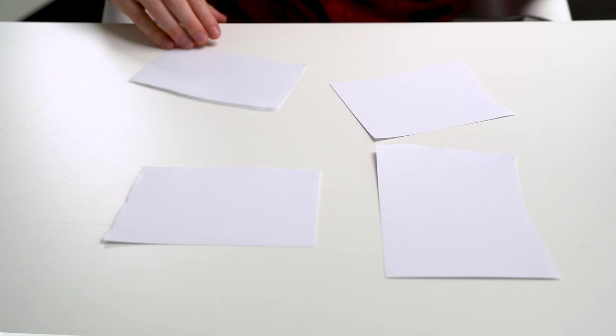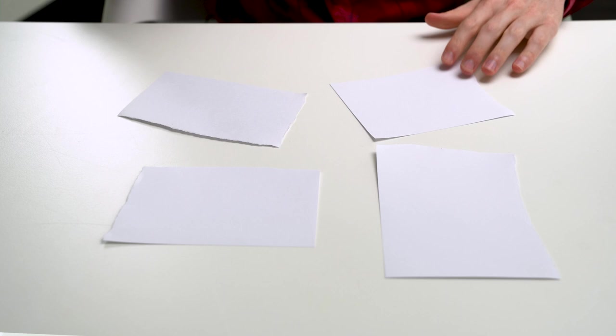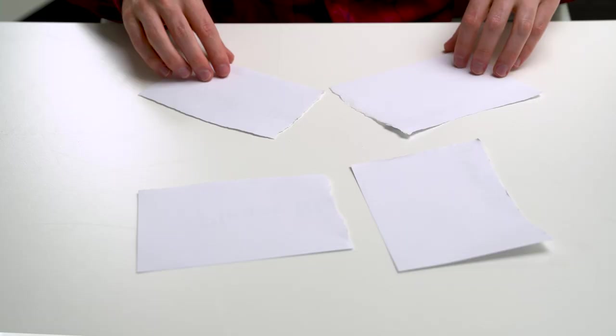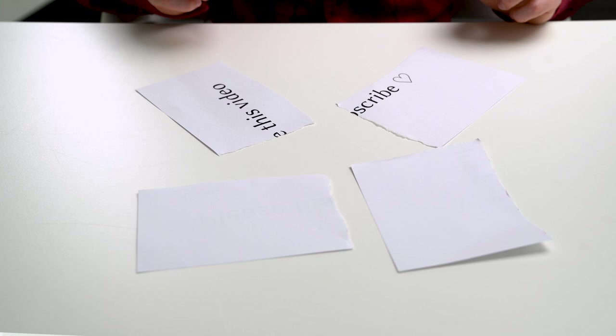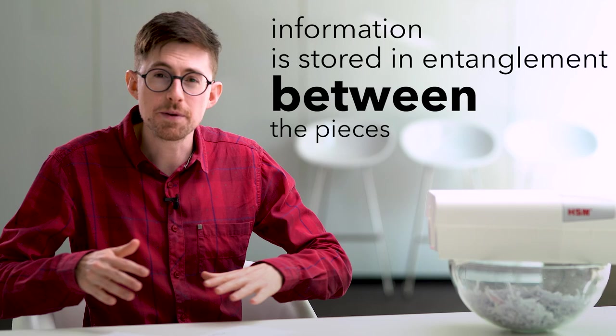Now, if you measure and look at a piece individually, then it looks empty. In fact, each of the pieces individually, they're empty. Only if you look at several pieces at once will you be able to recover some of the information. This is because the information is not present on one piece or the other piece anymore, but rather in the entanglement, in the quantum entanglement between the pieces.